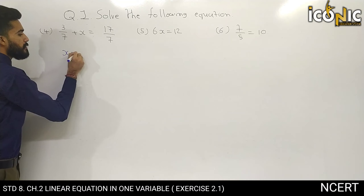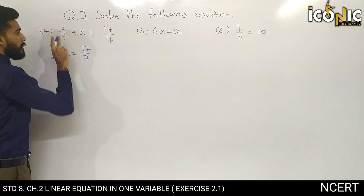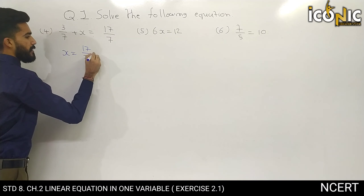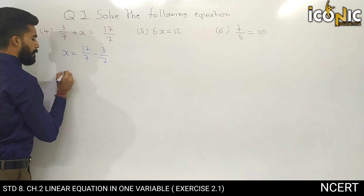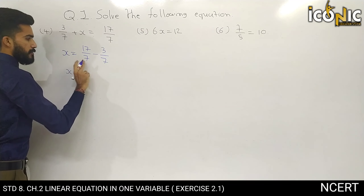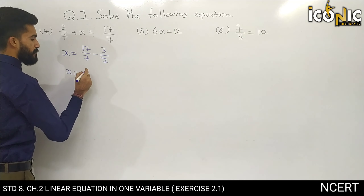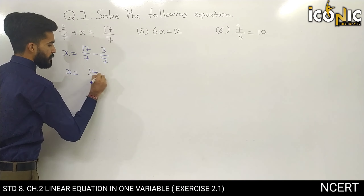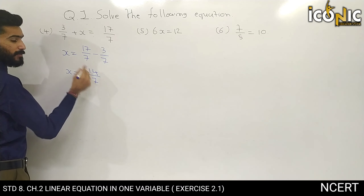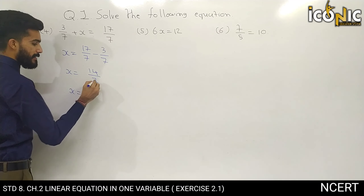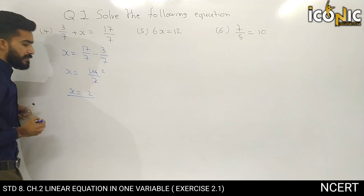So x is equal to 17 by 7 minus 3 by 7. Since the denominators are the same (both 7), we get 17 minus 3 equals 14, so x is equal to 14 by 7, which simplifies to x is equal to 2. That is our answer.